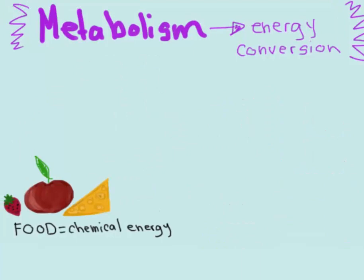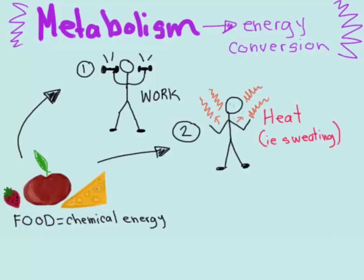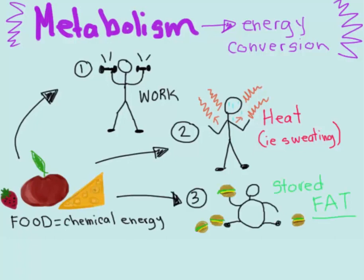For example, 9% of the energy intake from food goes into usable mechanical work when lifting weights, and 20% is transformed into mechanical work during bicycling. So most of the chemical energy from food is actually converted into heat. And if you sit around all day and eat junk food, the converted energy will go into stored fat.